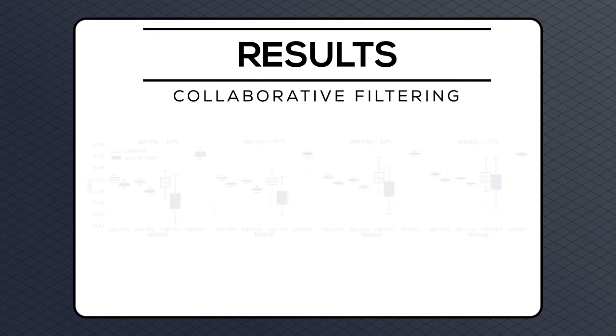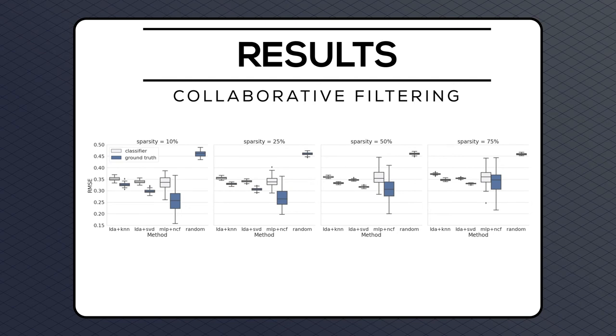In the collaborative filtering step, we compared the performance of several different pipelines: LDA plus SVD, LDA plus KNN, and MLP plus NCF. At 10% sparsity, the MLP plus NCF approach achieved the best performance, although at higher levels of sparsity, it performed roughly the same as the other methods.